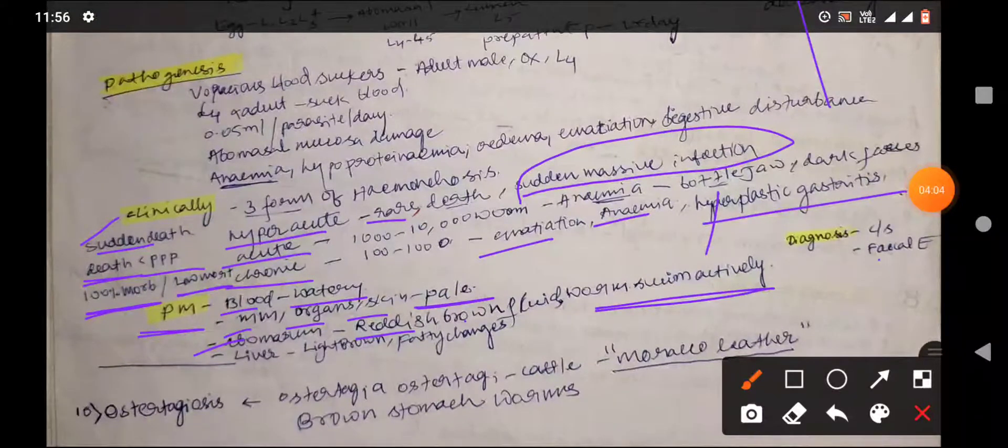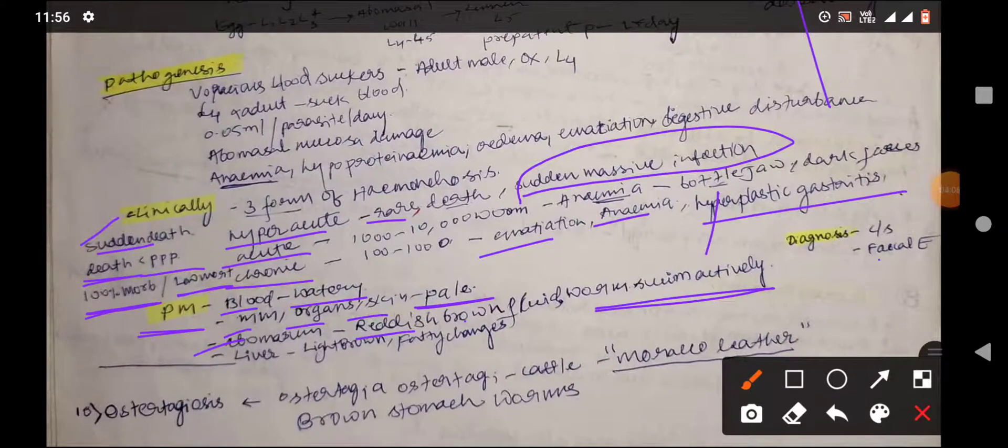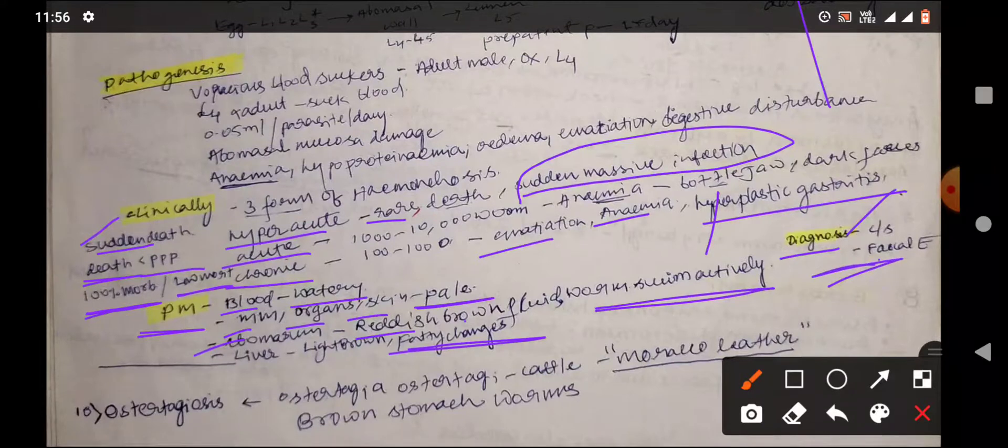The liver becomes light brown in color with fatty changes. It can be diagnosed using clinical signs and fecal examination for eggs.